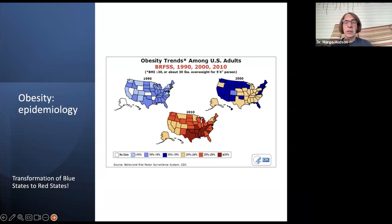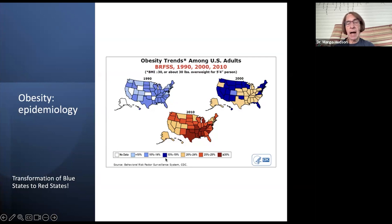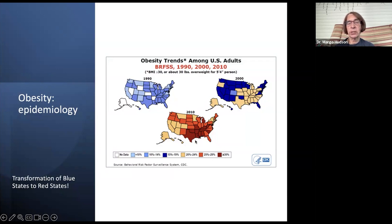This gives you an idea of the epidemiology of obesity over the years in the U.S. Our country is turning from blue states to red states in terms of obesity rates. In 1990, all states had no more than 19% of the population being obese. By 2020, there was a significant increase, with up to 24% of the population being obese. Now, especially marked in the south, many areas have more than 30% of the population being obese.